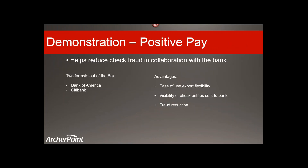The next topic is positive pay. Positive pay helps reduce fraud in collaboration with the bank. The checks that the company has issued are sent to the bank as a file to give them a heads-up. Any checks coming in that are not on this file would indicate a fraud alert. NAV 2016 comes with two positive pay formats out of the box for Bank of America and Citibank. The advantages are ease of use, export flexibility — it's one click to export the file — visibility of check entries sent to the bank, and overall fraud reduction.